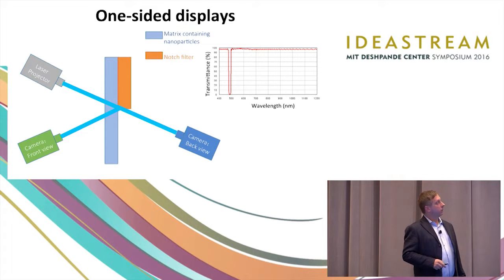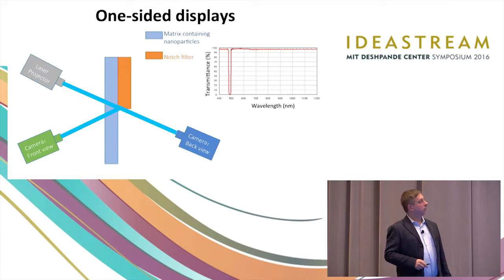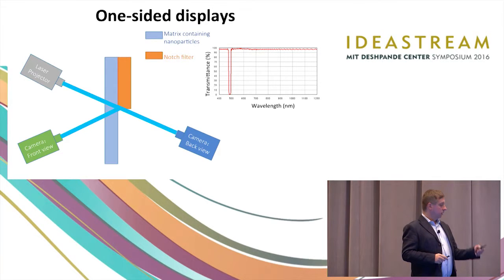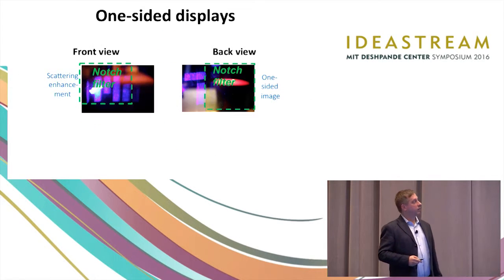Then another thing that we have been working on that we are also excited about is combining our laser projection scheme with a notch filter. So notch filter, in this case, reflects only very narrow blue light. So you can think of it as a mirror which is transparent for all wavelengths except blue, and then it reflects blue very strongly. So when you do that, basically what will happen is that on this side you'll see the image, but if you look at it from the back, you will not see an image, you will just see a transparent screen.